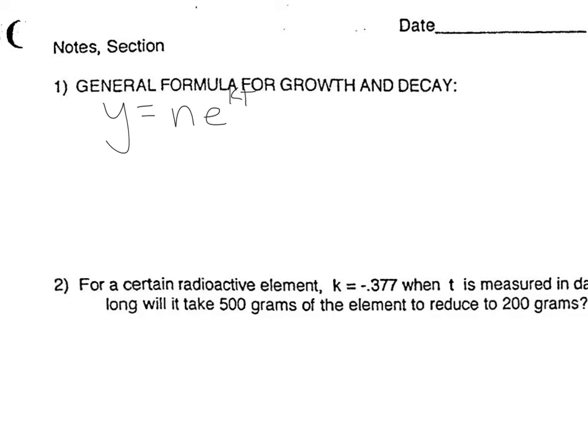Now if you look at it, it looks very similar to something else we've already talked about. You may recognize this as the PERT formula — it's basically the same formula. The only difference is the PERT formula dealt with only interest compounding continuously. This formula is for anything that grows or decays continuously, so it just broadens the context you can use it in.